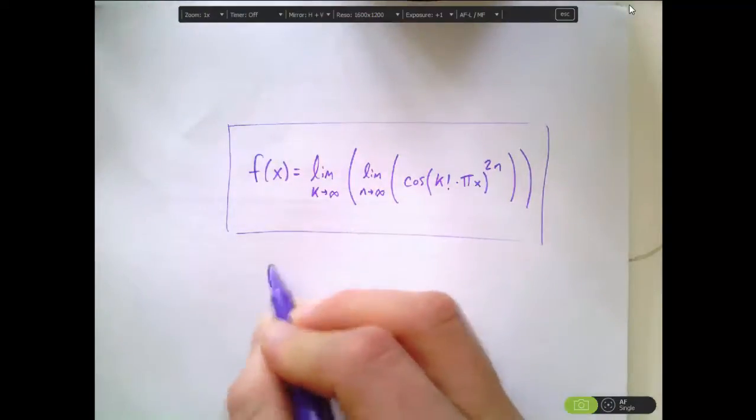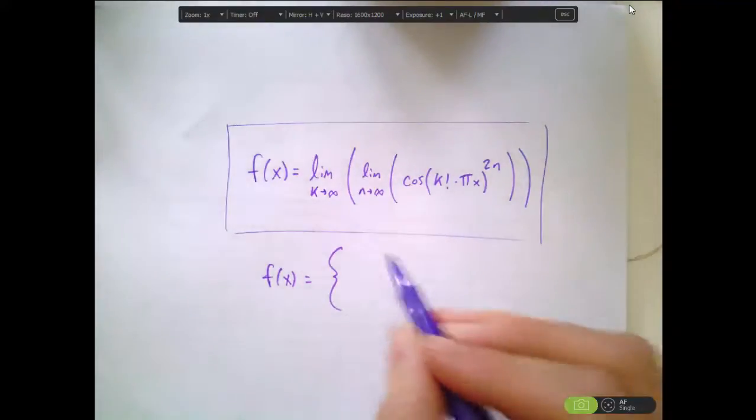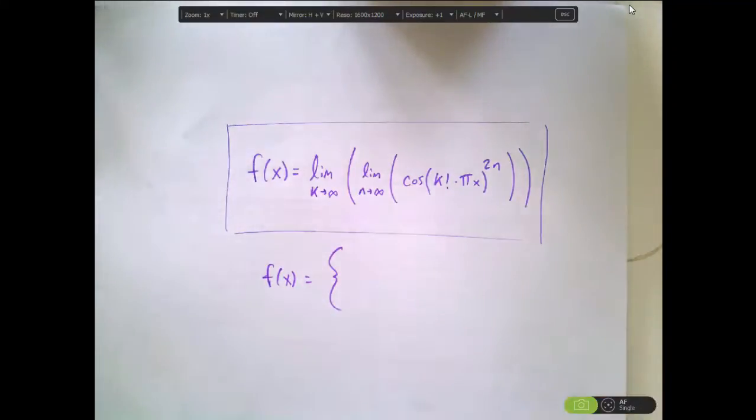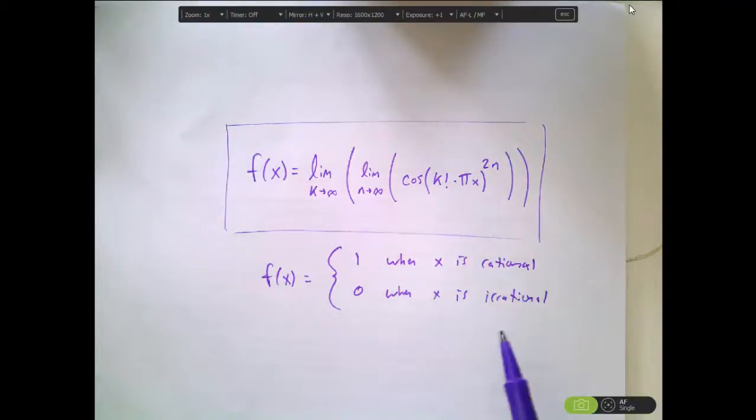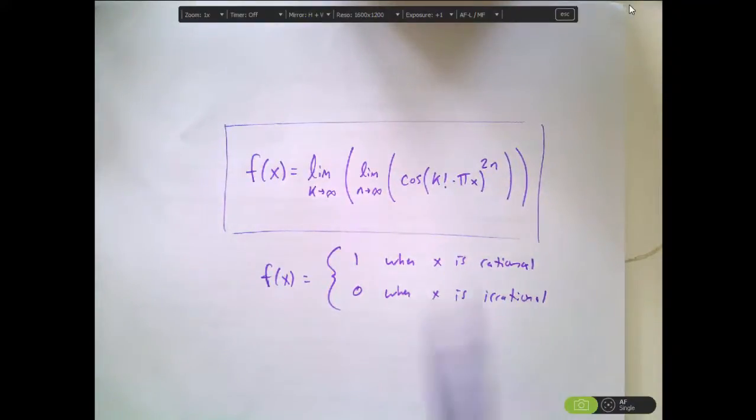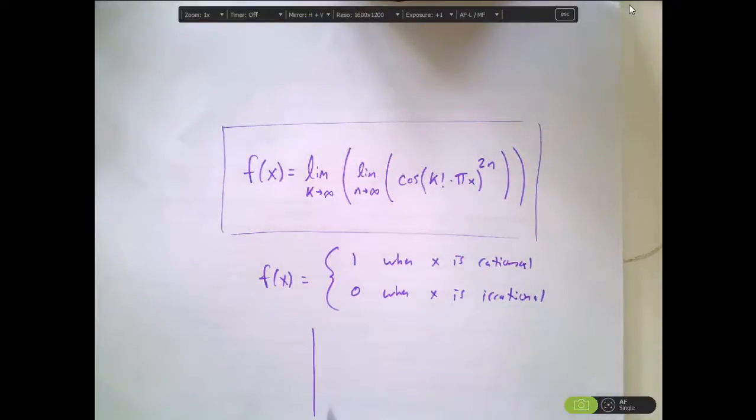So what do we have? We have a function. I'm going to define the same function in another way. We have a function that equals 1 when x is a rational number, and we have a function that's 0 when x is an irrational number. Every real number is either rational or irrational. So that means that this function's domain is all real numbers. It's defined everywhere. What does it look like if we graph it?